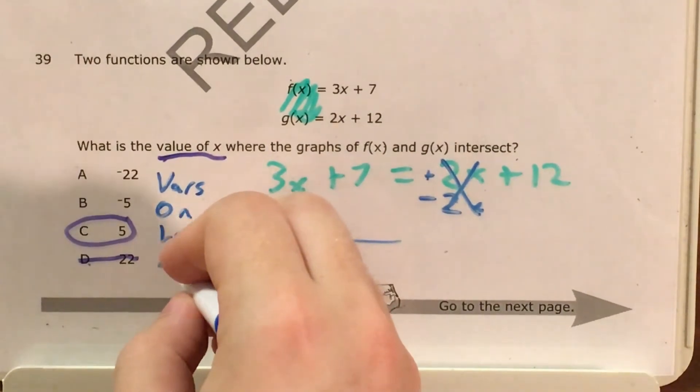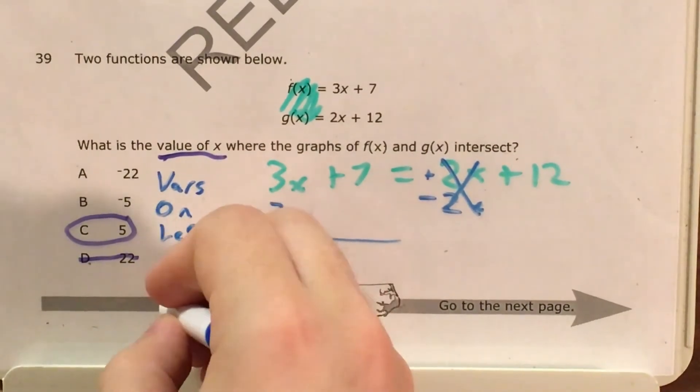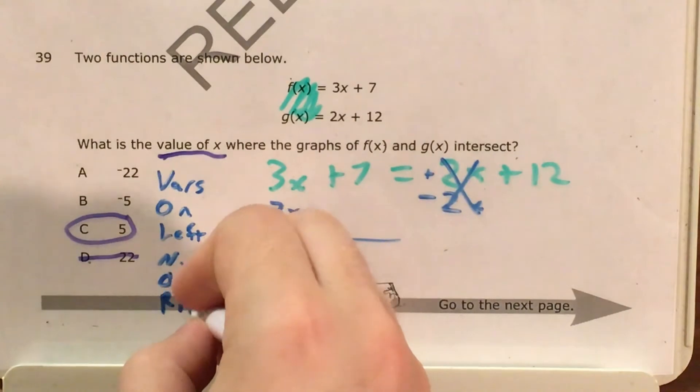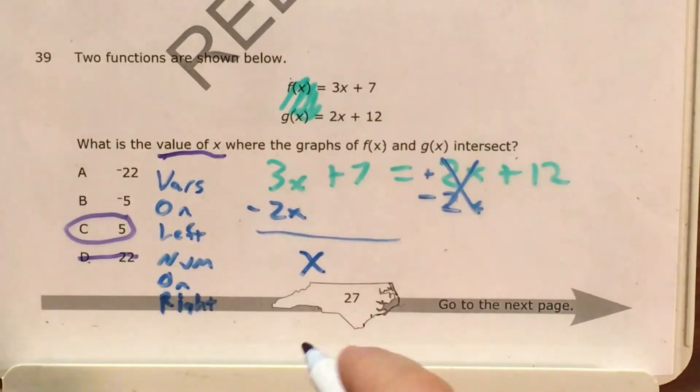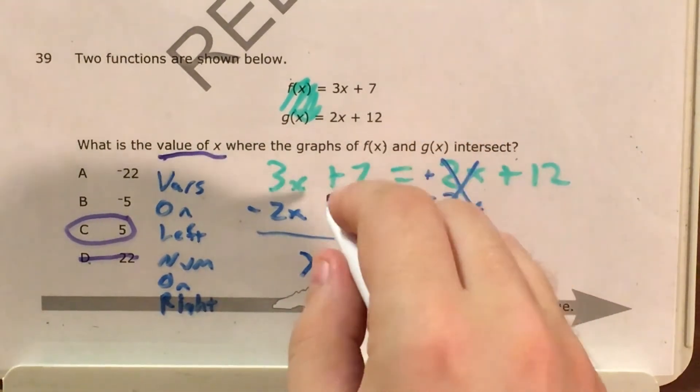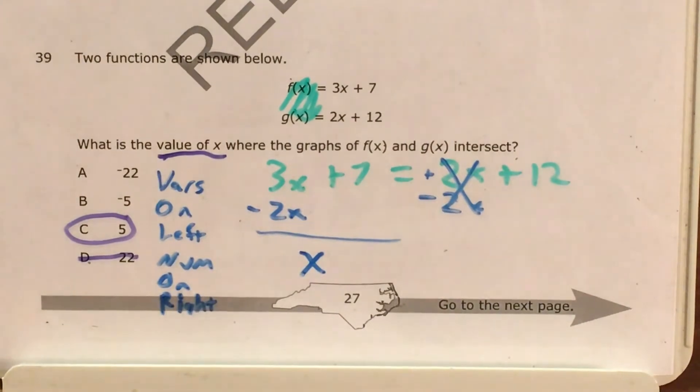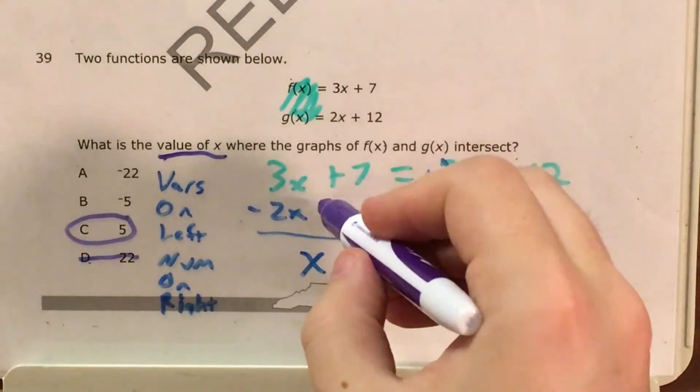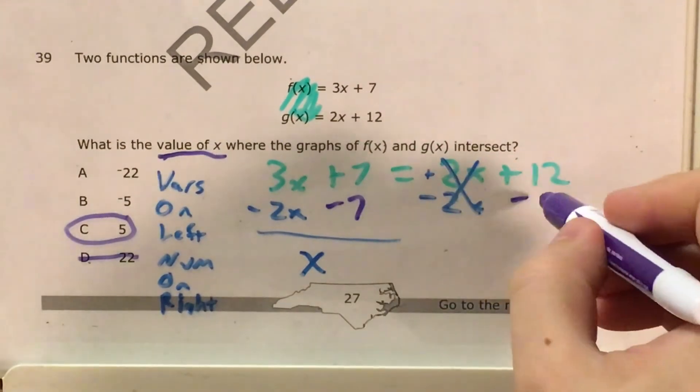And now I want to finish Vulnor by getting my numbers on the right. I see plus 7 on the left. And I don't want it there, so I'm going to subtract 7. Subtract 7.